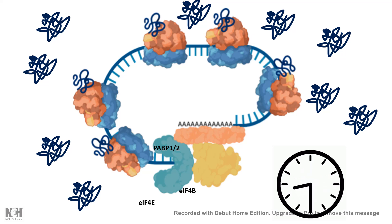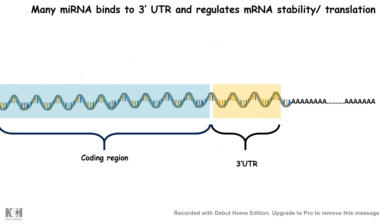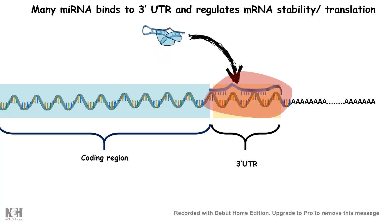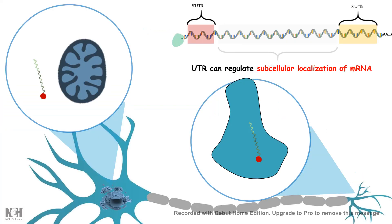The 3' UTR can also act as a docking site for microRNAs. MicroRNAs are processed and bind to the 3' UTR, followed by binding of a large complex that can regulate translation or aid in mRNA decay. MicroRNA-mediated regulation is therefore an important function of the 3' UTR, and many genes regulated in development and disease are controlled by microRNAs at their 3' UTR.